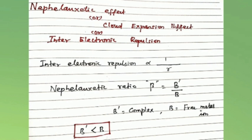The nephelauxetic ratio β is nothing but β'/β where β' is the complex and β is the free metal ion. Generally the nephelauxetic ratio measures the percentage of covalent character in the coordination bond. The complex value is less than that of a free metal ion.